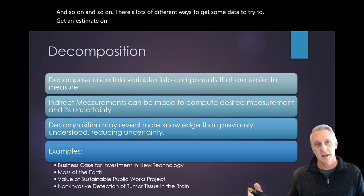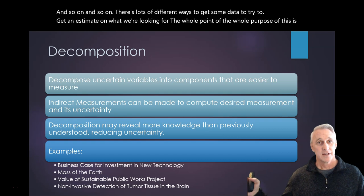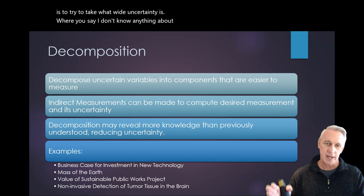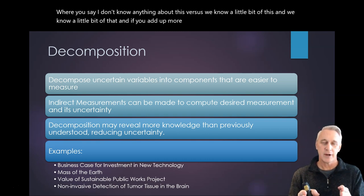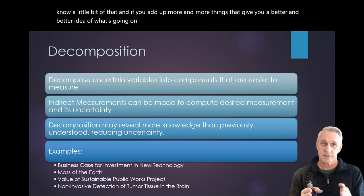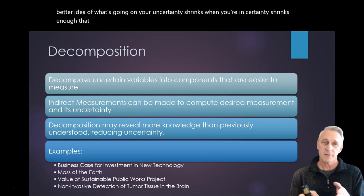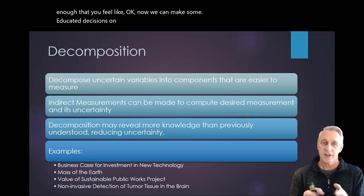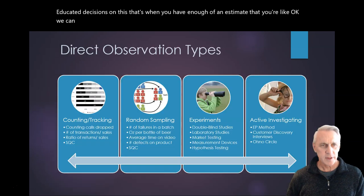And so on and so on. There's lots of different ways to get some data to try to get an estimate on what we're looking for. The whole point of this, the whole purpose of this is to try to take what wide uncertainty is, where you say, I don't know anything about this, versus, well, we know a little bit of this and we know a little bit of that. And if you add up more and more things that give you a better and better idea of what's going on, your uncertainty shrinks. When your uncertainty shrinks enough that you feel like, okay, now we can make some educated decisions on this, that's when you have enough of an estimate that you're like, okay, we can move forward.